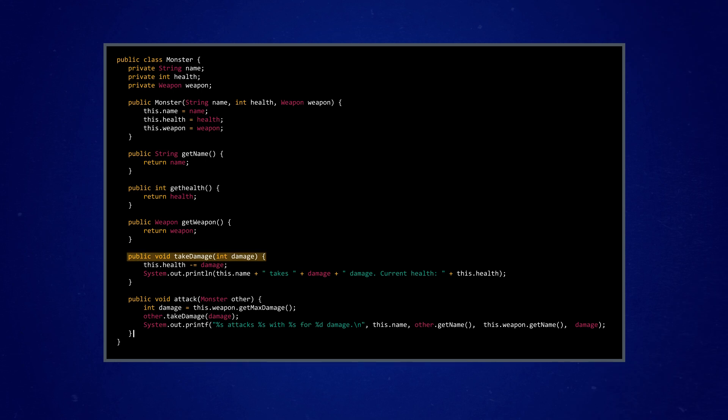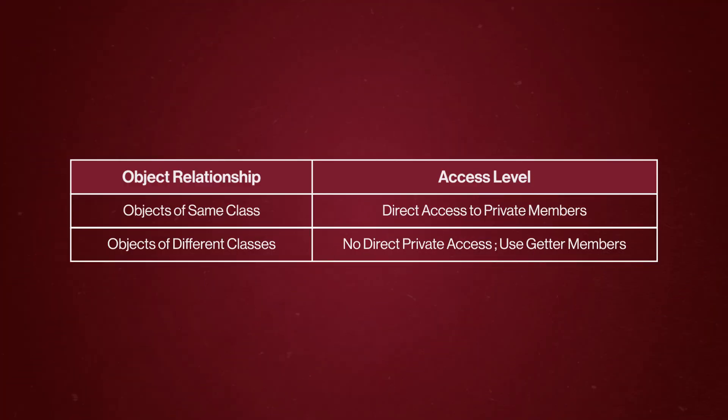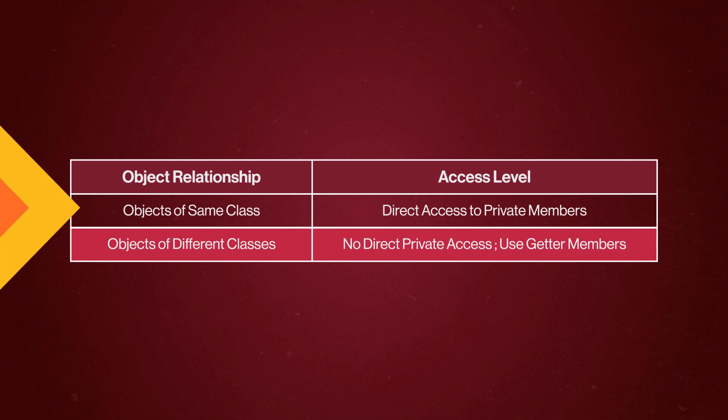In fact, it's kind of a double indirect access because they have to go through the attack method and the take damage method. This only works because both of the fighters are instantiated objects of the monster class. A monster can't change the private variables of a weapon, and vice versa, because objects that belong to different classes can't access each other's private attributes.